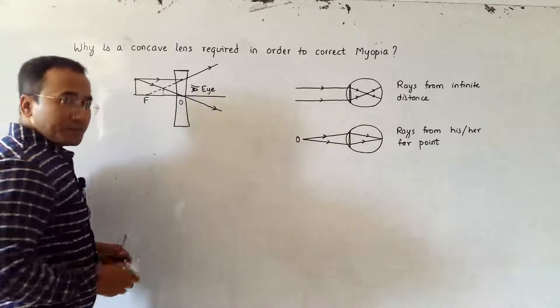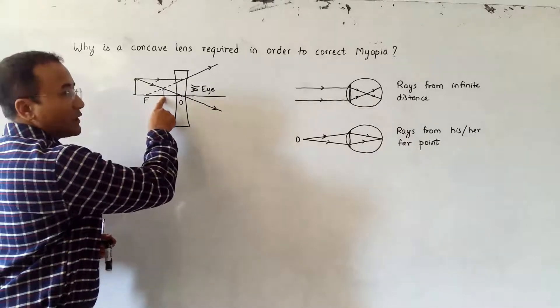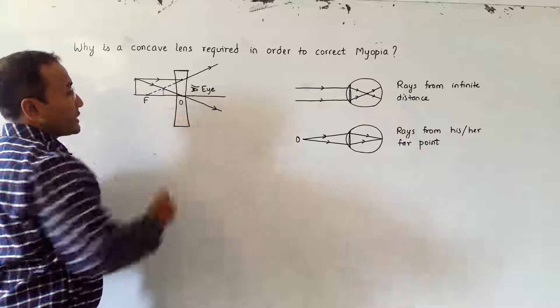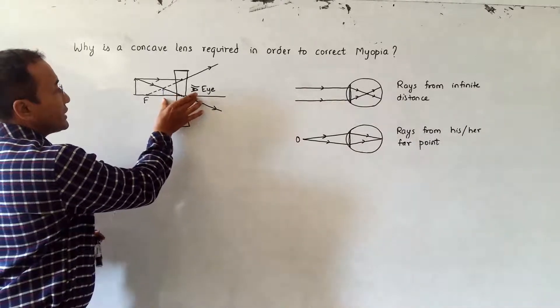So here there is a virtual image formed. Now if I place my eye here, it will see the image at this distance and the object at this distance.